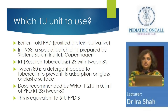Which TU unit to use? Earlier we used the old PPD. Then in 1958, PPD-S was started — the purified protein. What was recommended is 5 TU of PPD-S. Then PPD-S was combined with Tween-80 as a detergent so tuberculin doesn't stick to plastic or glass syringes. Finally, this was converted to PPD-RT — research tuberculosis. 1 TU of PPD-RT is equivalent to 5 TU of PPD-S. Current recommendation: use 1 TU of PPD-RT or 5 TU of PPD-S — both are equivalent. When using RT, stick to 1 TU.